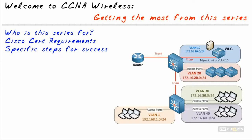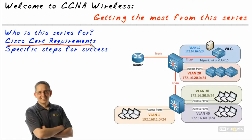In addition to improving your skills and getting better at wireless local area networks, Cisco also has a certification that this series can help you pursue. Here's my thinking: as you and I go through this series together, nugget by nugget, we're going to learn how to implement, configure, and troubleshoot a wireless network, and as a byproduct, if we choose to take a certification exam, we can validate our knowledge with a CCNA Wireless certification following your name.